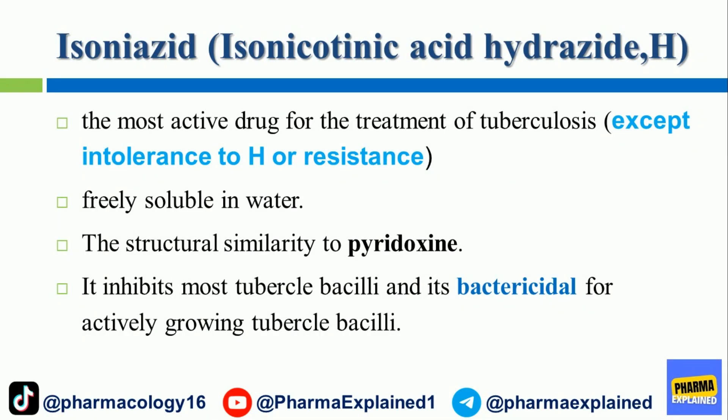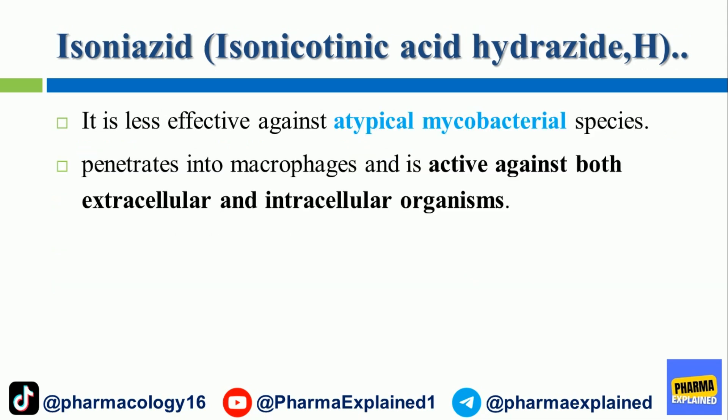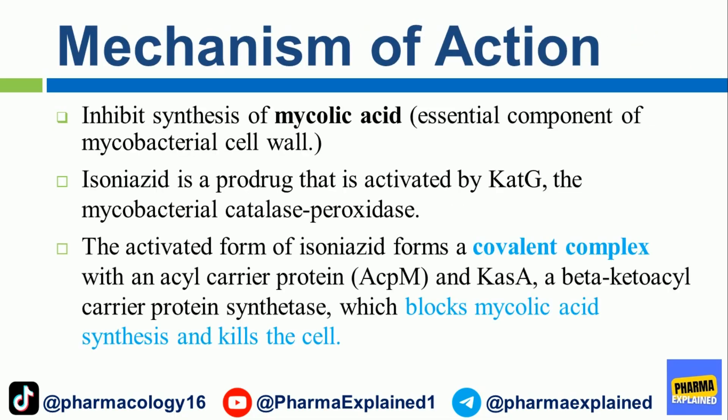Isoniazid (isonicotinic acid hydrazide, INH) is the most active drug for the treatment of tuberculosis except in cases of intolerance or resistance. Freely soluble in water, it has structural similarity to pyridoxine. It inhibits most tubercle bacilli and is bactericidal for actively growing tubercle bacilli. It is less effective against atypical mycobacterial species. It penetrates into macrophages and is active against both extracellular and intracellular organisms.